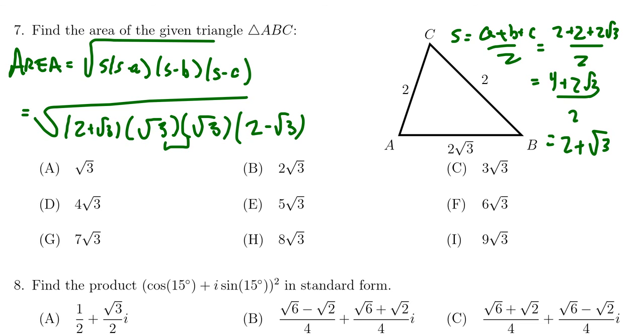Now, notice the square root of 3 times itself is going to give us 3. And then if you take 2 plus root 3 times it by 2 minus root 3, that's its conjugate, they'll actually end up with 4 minus 3. This is still inside of the square root, of course. And so you end up with the square root of 3 as the area of this triangle. And so we would select choice A.